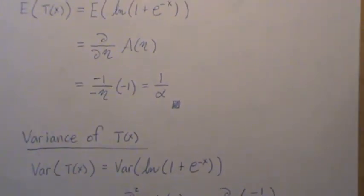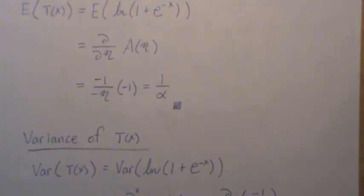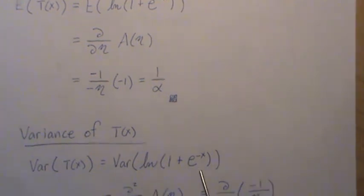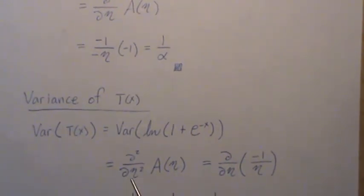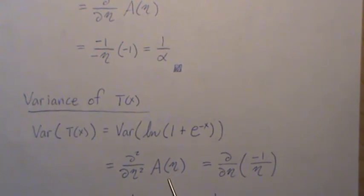The variance is the second derivative. So the variance of our sufficient statistic is the variance of this, which is the second derivative of the log partition, or the first derivative, or the derivative of the derivative.